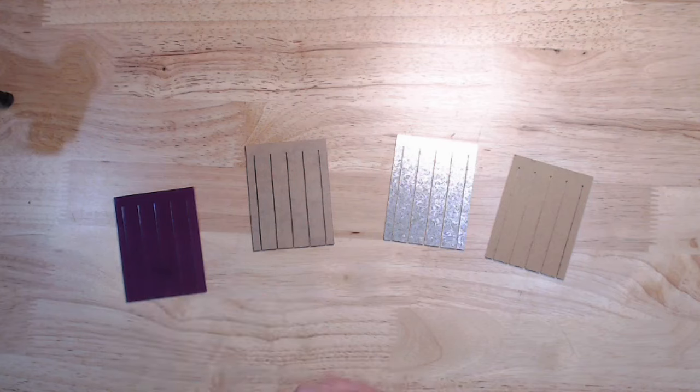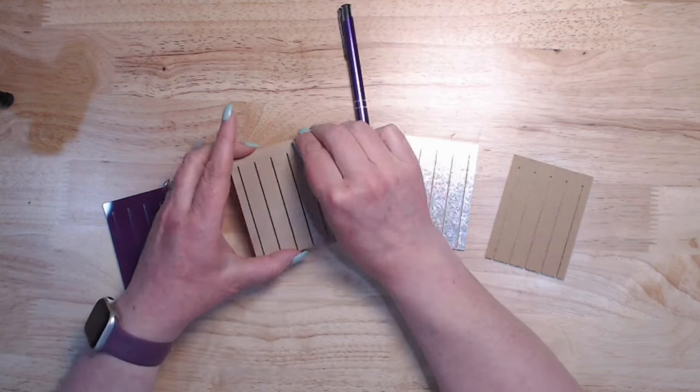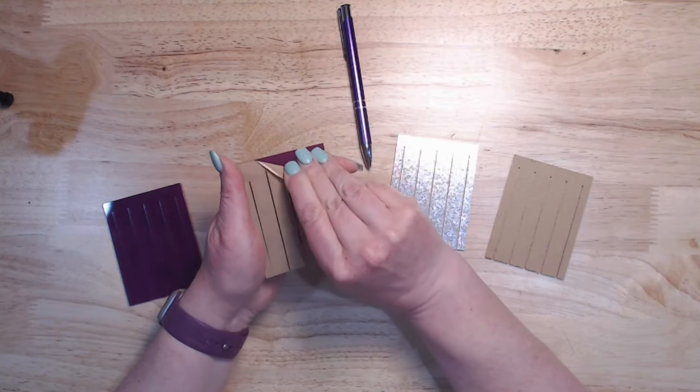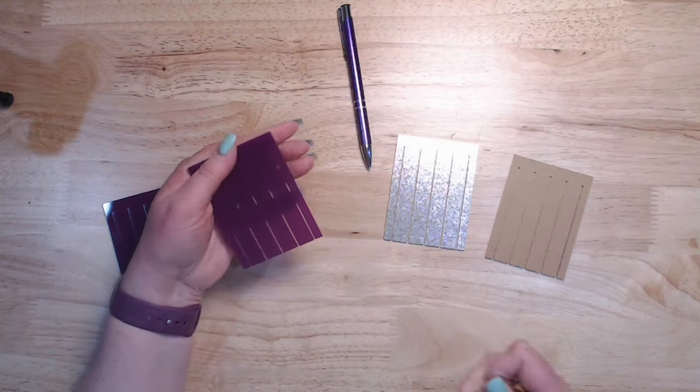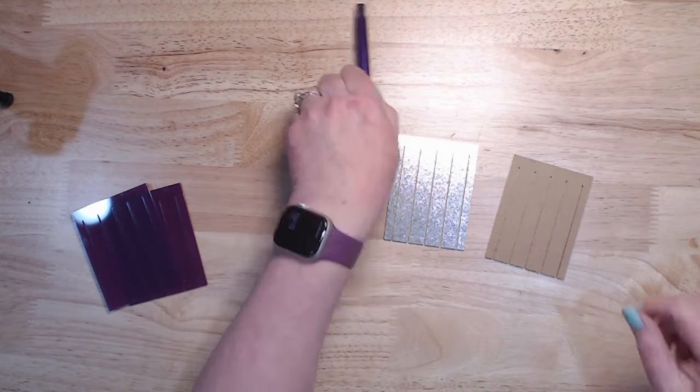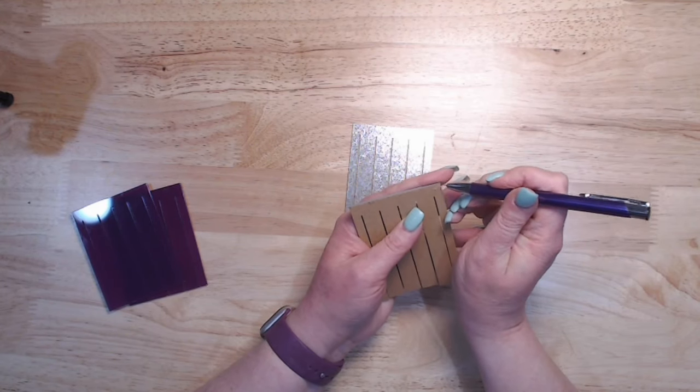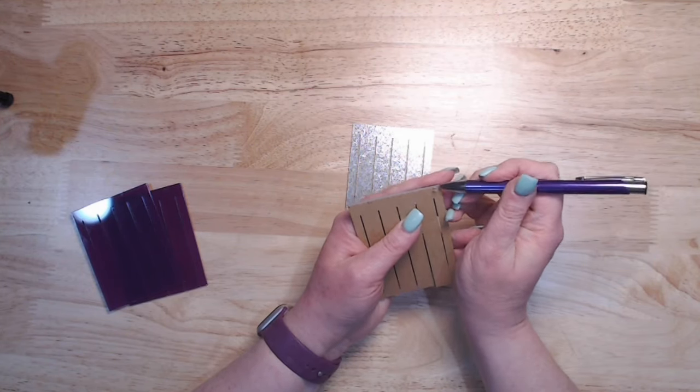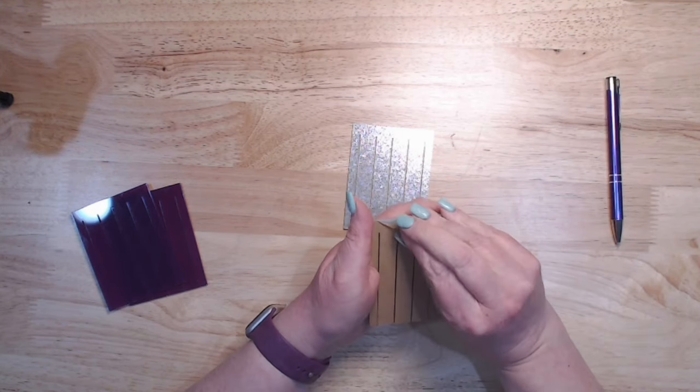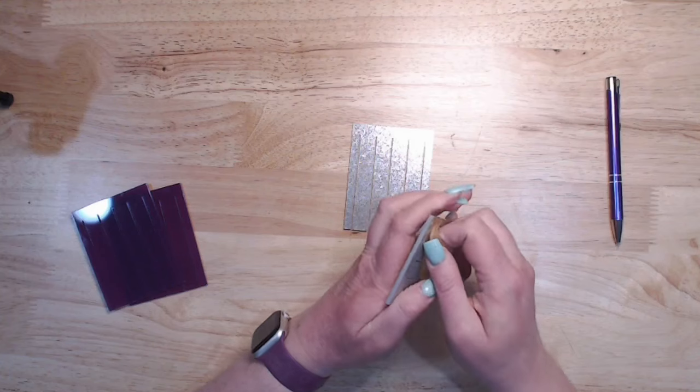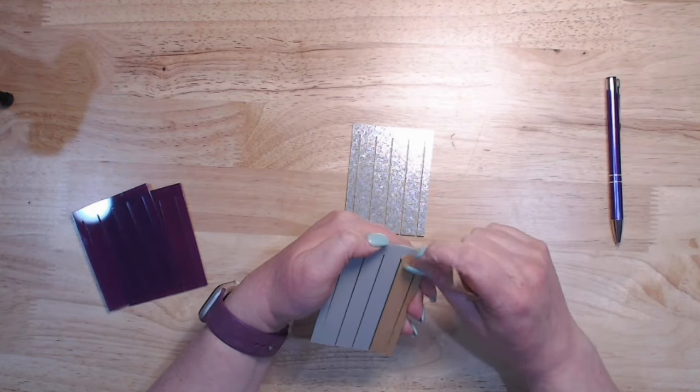When you get these they will be masked on both sides. All you have to do is just lift up a corner and peel this back, and this will peel right off. Let me do it again with the silver.